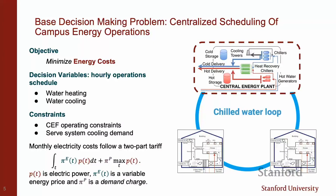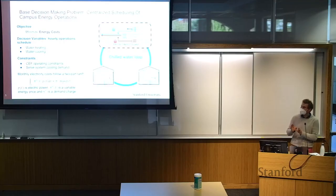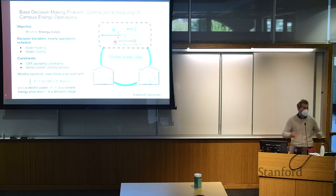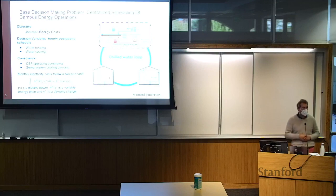We also pay what's called a demand charge — essentially looking at your maximum power draw over the course of the month and paying a price for that. An analogy: you pay both for volume and rate — the size of the pipe and how much went through it over the course of the month. Your main decision variables are how much to heat and cool water with each machine, with the option to store water, and the constraint that you need to give people their heating and cooling.